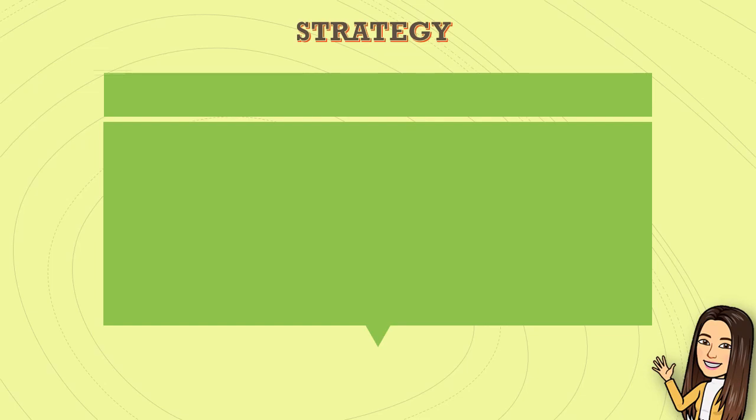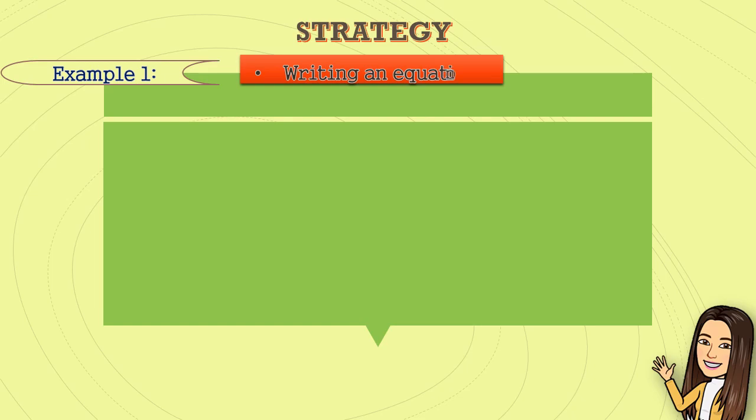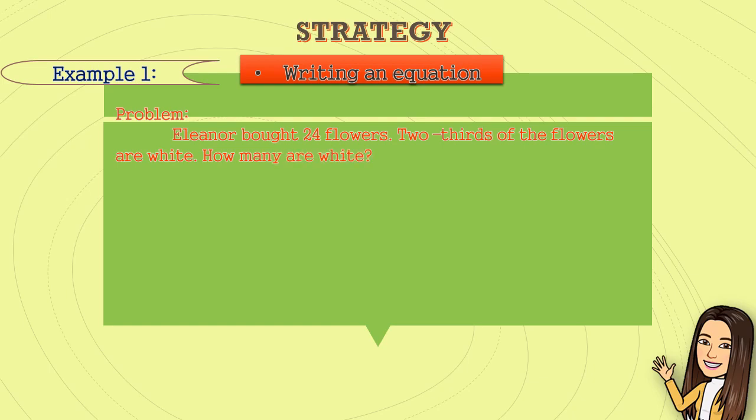Strategy Example number one: Writing an equation. Eleanor bought 24 flowers. Two-thirds of the flowers are white. How many are white?